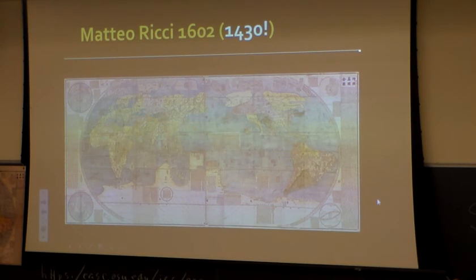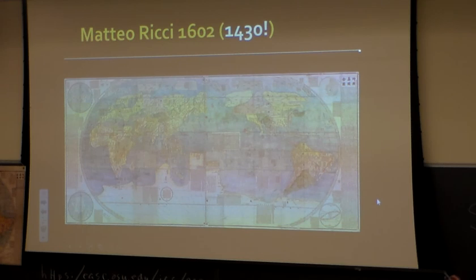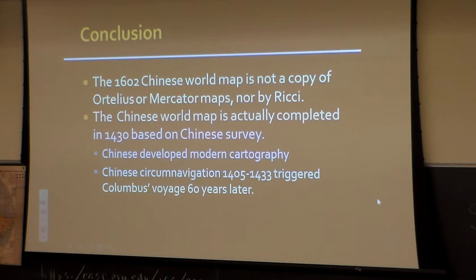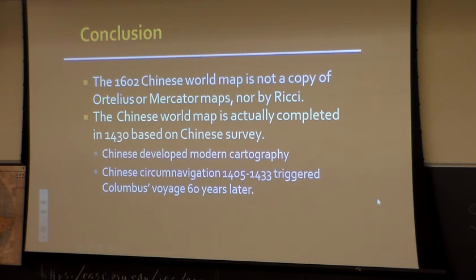Finally, Matteo Ricci really didn't draw this map. It is not even done in 1602 — it's done in 1430, because it's all in Chinese. There's no way the European cartographers could draw this map, and they already admitted it, because they called it an 'impossible black tulip.' They already said that — just people didn't click. So here comes the conclusion: the 1602 Chinese world map is not a copy of Ortelius or other European maps, nor drawn by Ricci. The original map was actually completed around 1430, based on Chinese surveys of the six voyages they conducted. The Chinese developed modern cartography as seen on Martino Martini's atlas, and in order to draw the map they must have navigated between 1405 to 1430, which then triggered the Columbus voyage later.